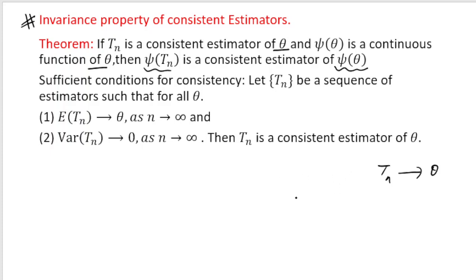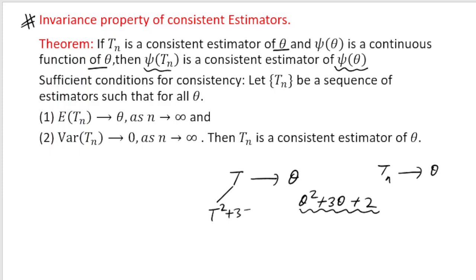For example, suppose T is a consistent estimator of theta. Now I am taking a continuous function of theta, say theta squared plus 3 theta plus 2. This is a polynomial in terms of theta, so it is a continuous function of theta. Then if I take the similar function T squared plus 3T plus 2, then this will be a consistent estimator of theta squared plus 3 theta plus 2. Similarly, if I take e to the power theta — exponential functions are also continuous — then we can claim that e to the power T will be a consistent estimator of e to the power theta. So if Tn is a consistent estimator of theta and psi(theta) is a continuous function, then psi(Tn) is a consistent estimator of psi(theta).